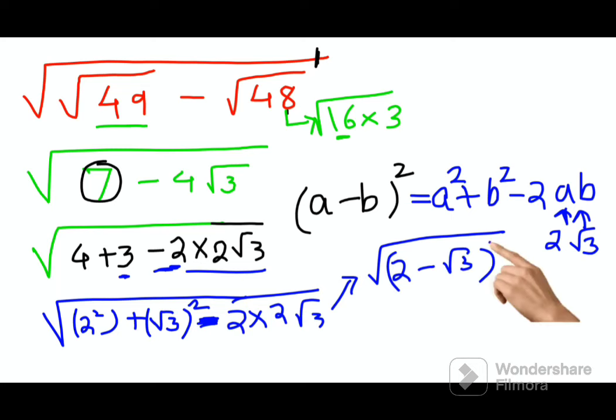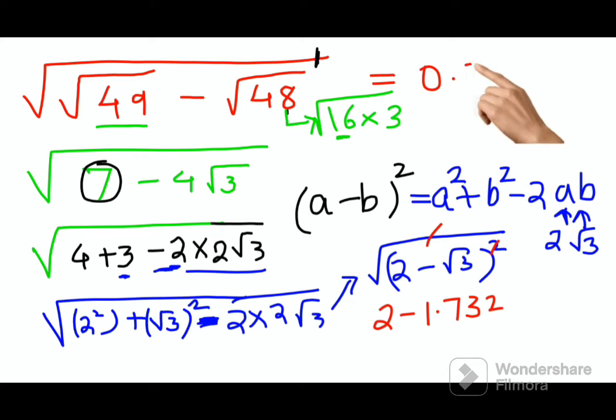Now as we all know, this square root and the root or square sign can get cancelled, so you have 2 minus root 2 minus root 3, which is nothing but 1.732. So when you subtract 1.732 from 2, you get the answer as nothing but 0.268. That is your answer for this particular question.